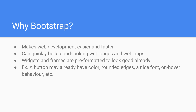For example, using Bootstrap we can simply add a button to our page, specify it to be of the Bootstrap button class, and it will likely already have some kind of color, rounded edges, maybe a nice font, on-hover behavior, among others. These are all attributes that we would have to specify ourselves if we were not using something like Bootstrap.